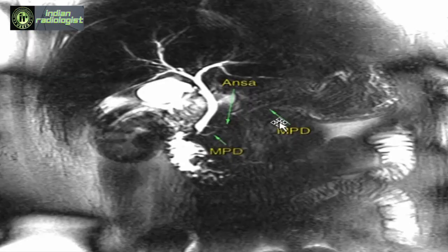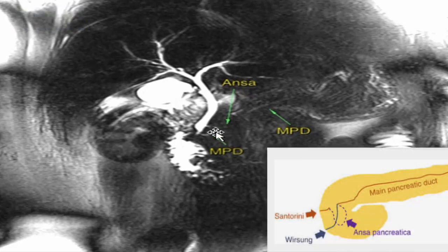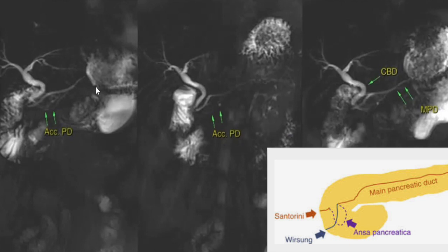This is a thick slab MRCP image of a patient with carcinoma gallbladder. The main pancreatic duct is seen to form a confluence with the terminal CBD and drain into the major duodenal papilla. An accessory duct is seen arising from the main pancreatic duct forming a small loop, crossing the CBD and draining into the minor papilla. These findings are consistent with ANSA pancreatica, which is a predisposing factor for pancreatitis.